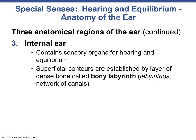The middle ear ends at the stapes, which connects to an overall structure called the bony labyrinth. The bony labyrinth is part of the internal ear and contains the sensory organs for hearing and equilibrium. The superficial contours are established by layers of bone — hence the name bony labyrinth. Inside the bony labyrinth is the membranous labyrinth, simply a network of canals.